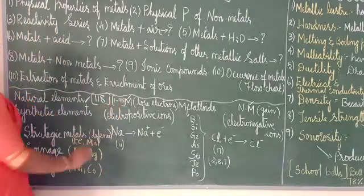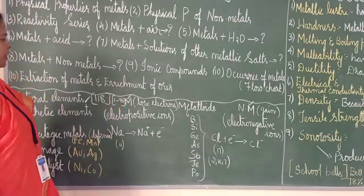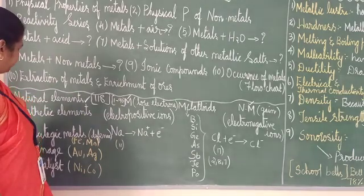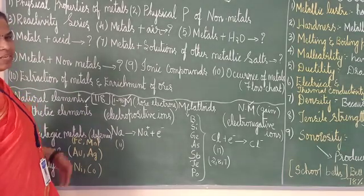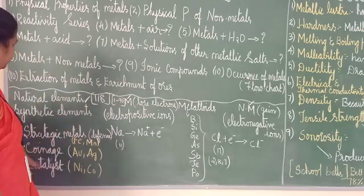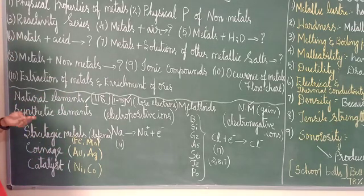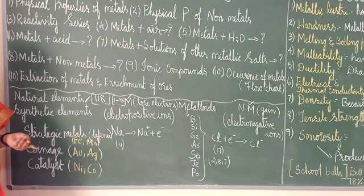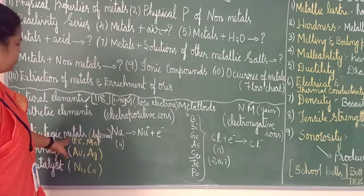Now in metals, there are different types. We will study some important ones. Strategic metals — they are durable, thin, and they are used in defense. For example, iron and manganese (Mn) are strategic metals.